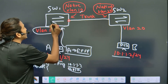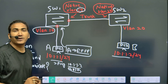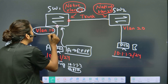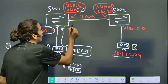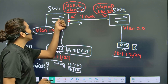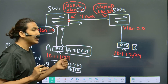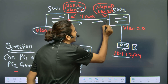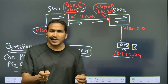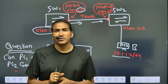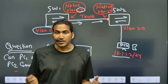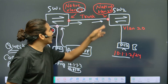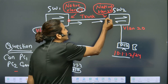On Switch 1, the native VLAN is VLAN 10. This broadcast frame arrived on a VLAN 10 interface, so when Switch 1 forwards it out the trunk, it does not add a tag — it forwards the original frame as-is to Switch 2. When Switch 2 receives this frame on the trunk link, it checks the tag to identify the VLAN. Since there is no tag, Switch 2 concludes this is native VLAN traffic.